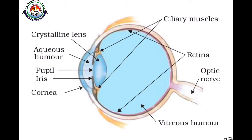The pupil is a black opening between the aqueous humor and the eye lens. It regulates and controls the amount of light entering the eye.